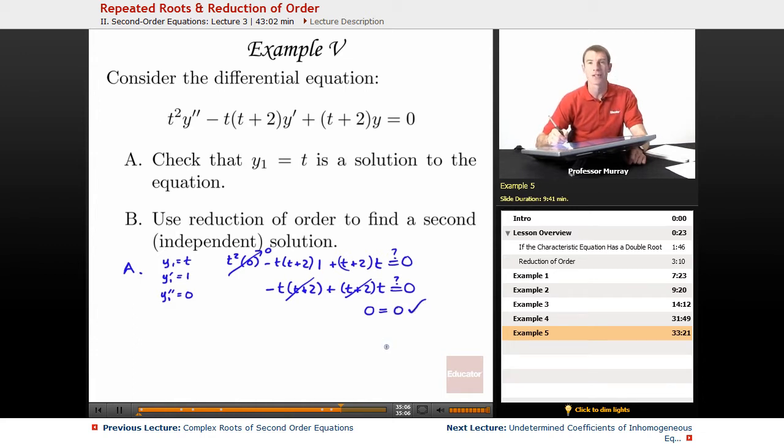So that checks. We found the derivatives of this hypothetical solution, plugged them into the differential equation for y double prime, y prime, and y, simplified it down, and verified we got 0 equals 0. That was the easy part.